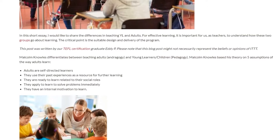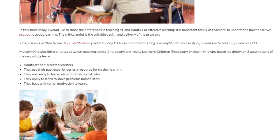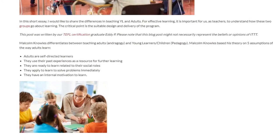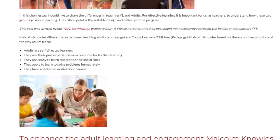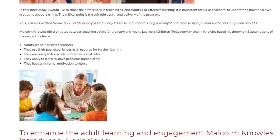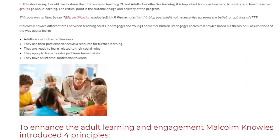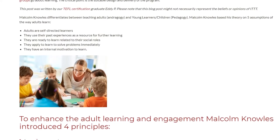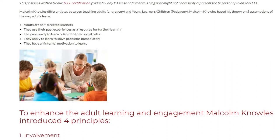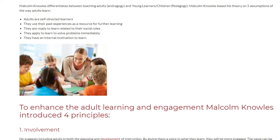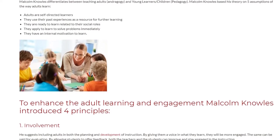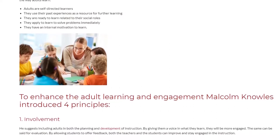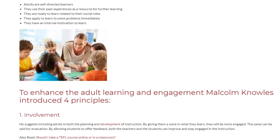Malcolm Knowles based his theory on five assumptions about the way adults learn. Adults are self-directed learners. They use their past experiences as a resource for further learning. They are ready to learn in relation to their social roles. They apply learning to solve problems immediately, and they have an internal motivation to learn.